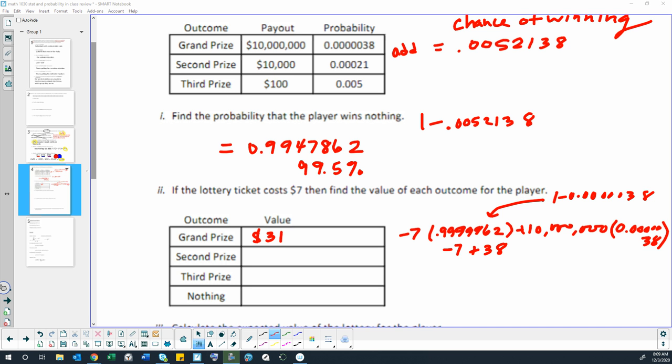For the second prize, it would be negative $7 per ticket times a probability of 1 minus 0.00021 plus 10,000 times the probability of 0.00021. When we add that together, you can use a calculator to do it.